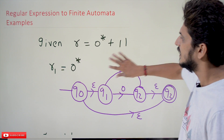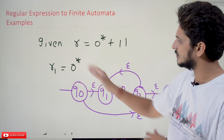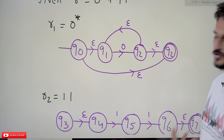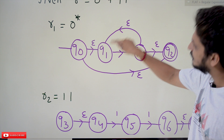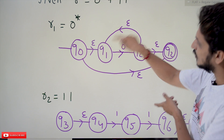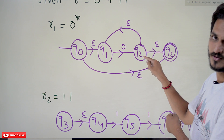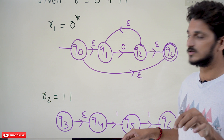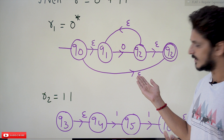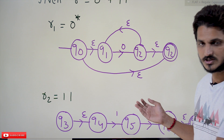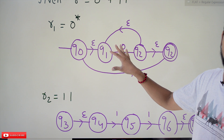Let's take r1 equal to 0*. We give it a separate expression. For the finite automata of 0*, whenever we find a 0, we can go back and check for 0 again any number of times. Also, 0* accepts epsilon, so on the initial state we move to the final state without taking any input, using epsilon moves. This is the finite automata for 0*.